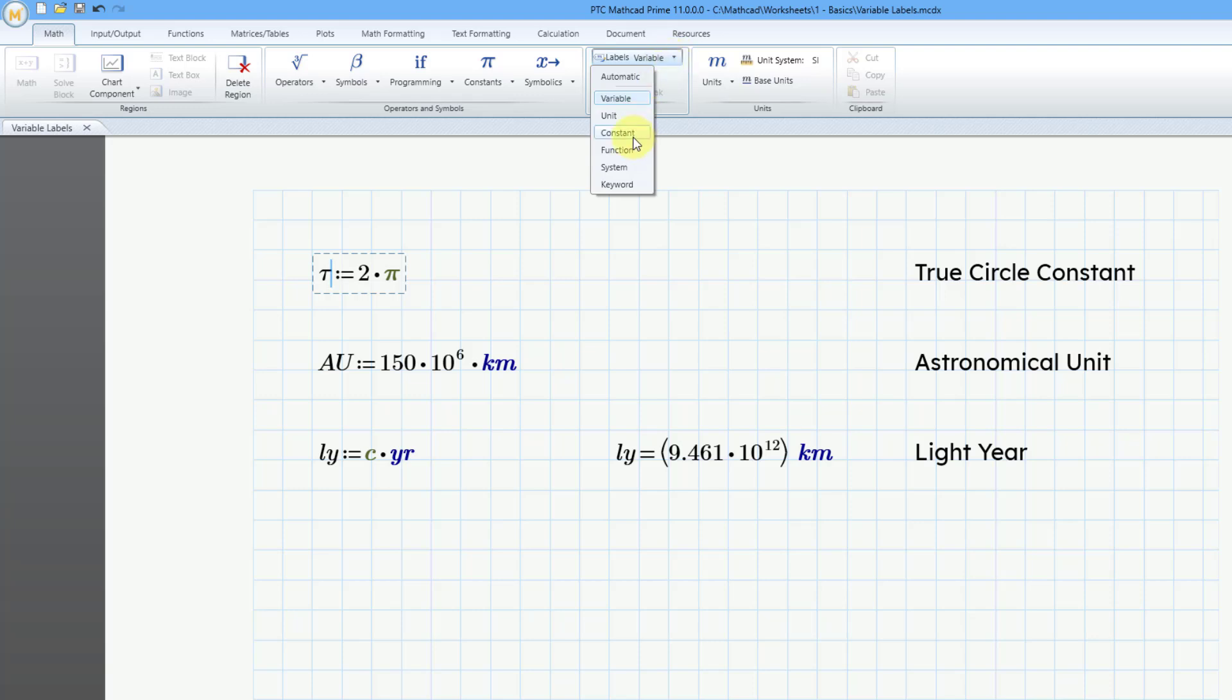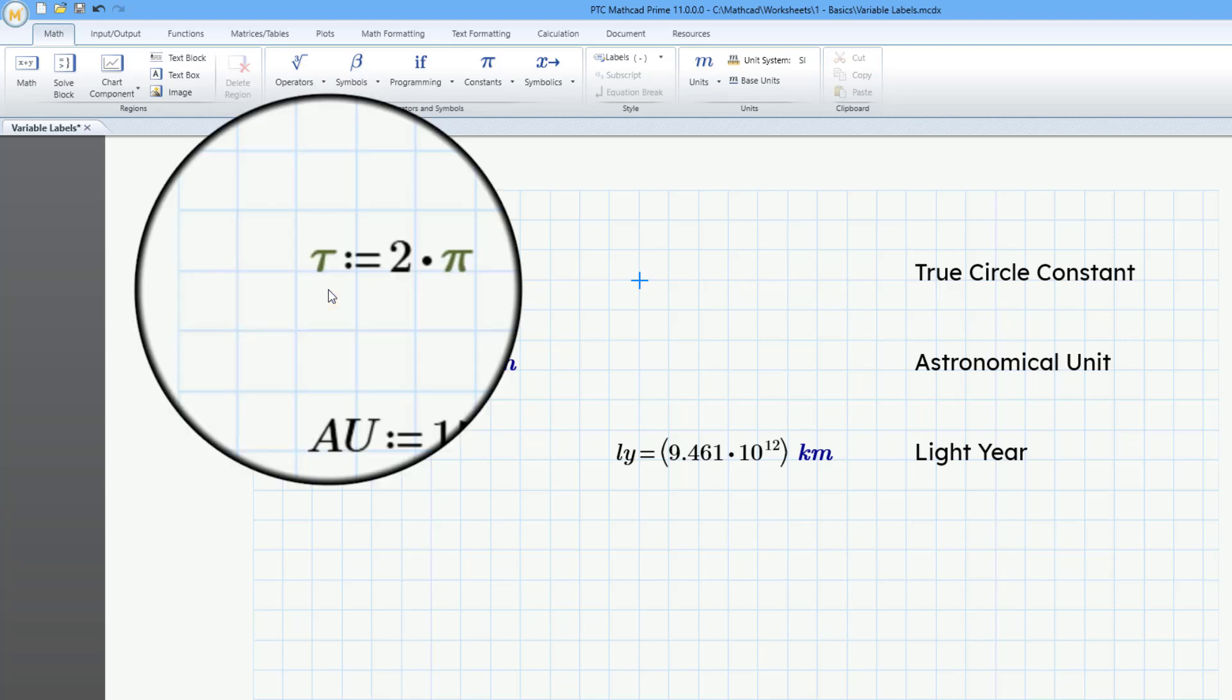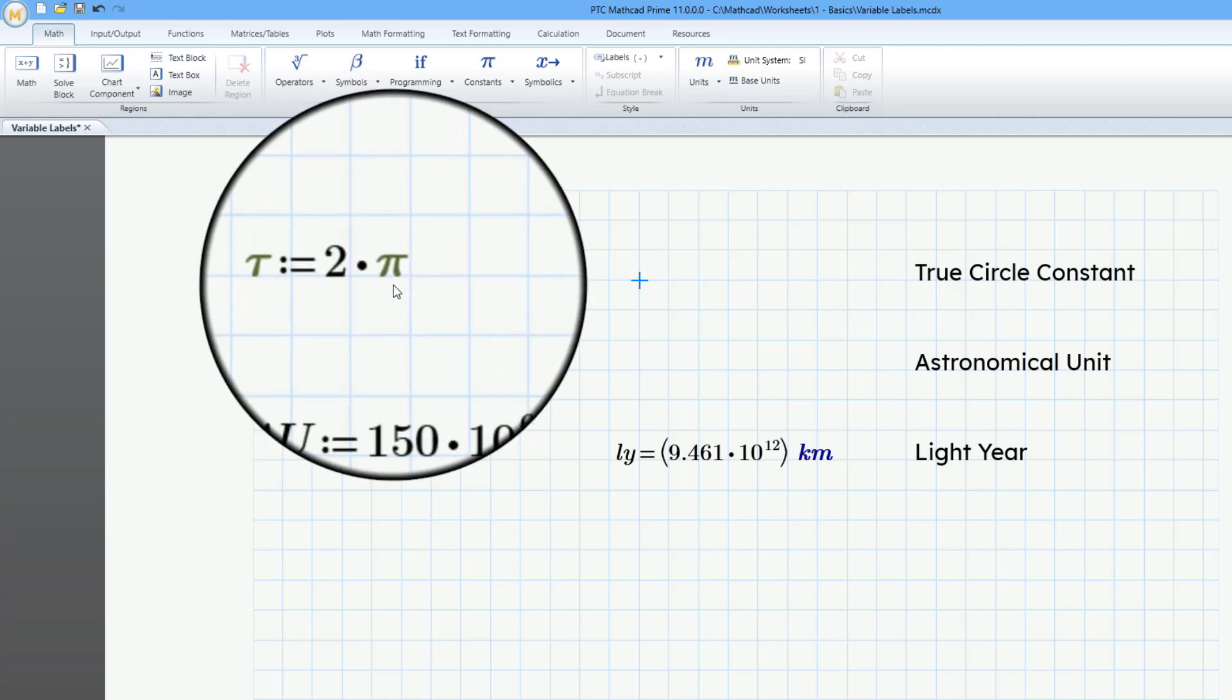But instead, I can choose constant. And when I click outside, you'll notice that it has changed the color to the same color as the built-in constant Pi.